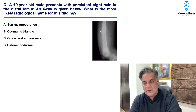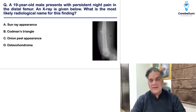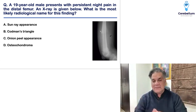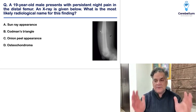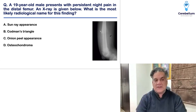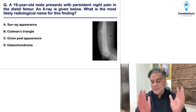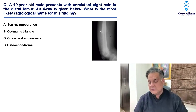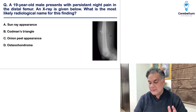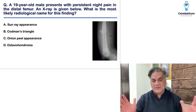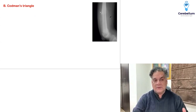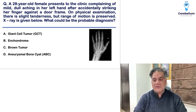For comparison, an osteosarcoma question typically shows the lower end of the femur with an arrow pointing to Codman's triangle, indicating osteosarcoma. That's how an osteosarcoma image will look versus the Ewing's sarcoma presentation.